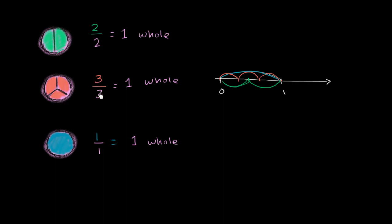So two halves, 3 thirds, one over one, or 1 over 1, these all are different ways of representing the number 1, or 1 whole.